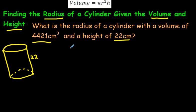Let's start by writing the formula down. The volume formula for a cylinder is pi r squared, so r times r, that's what the squared means, times the height.